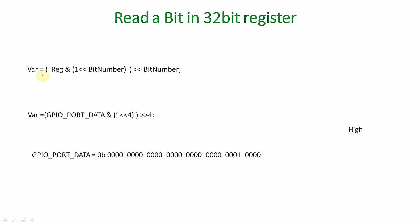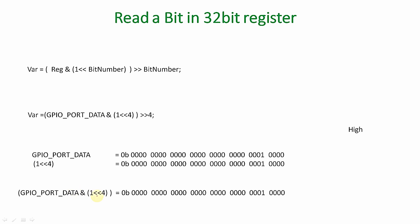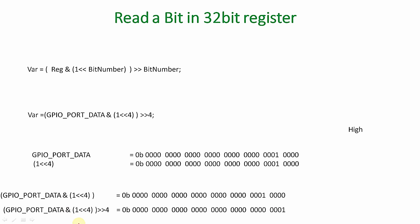Now let's take case 2, where bit 4 is high initially in the GPIOPORTDATA register. Bit 4 is having the value high. '1 left-shifted by 4' is the same as before — only bit 4 is set. When you perform GPIOPORTDATA AND (1 left-shifted by 4), I get 1 AND 1 = 1 as the result in the fourth bit position. All other bit positions remain zero because every other bit in '1 left-shifted by 4' is zero.